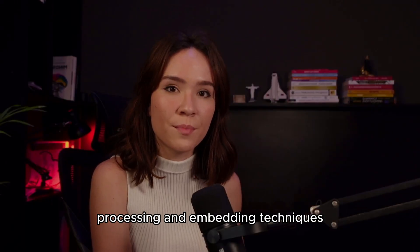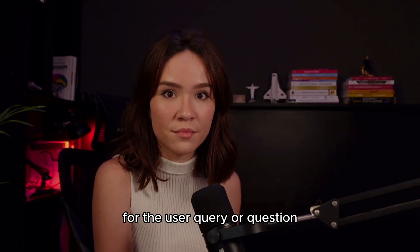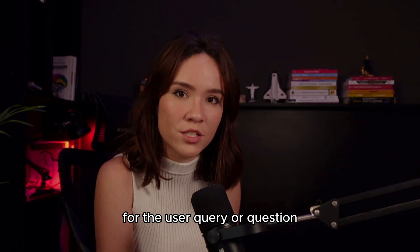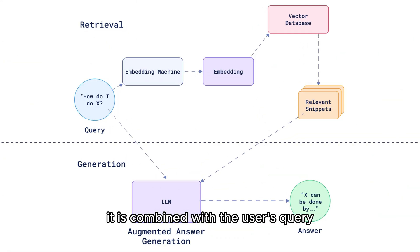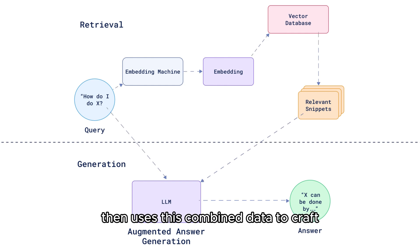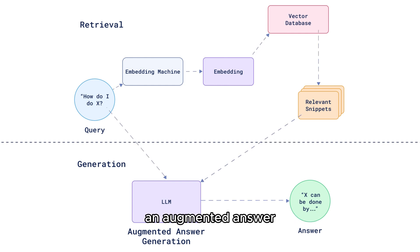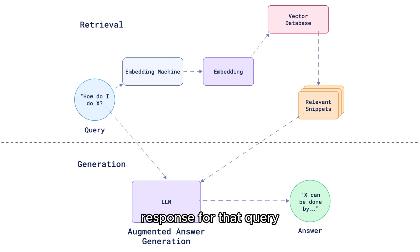We can use the same preprocessing and embedding techniques for the user query or question. Once the relevant information is retrieved, it is combined with the user's query. The LLM then uses this combined data to craft an augmented answer, which is a more accurate and higher quality response for that query.